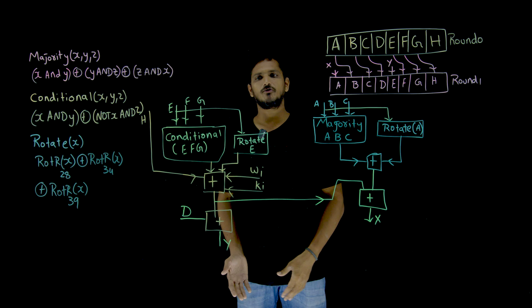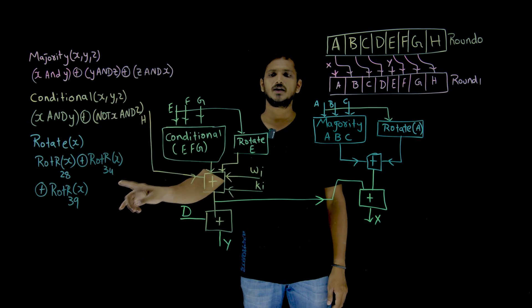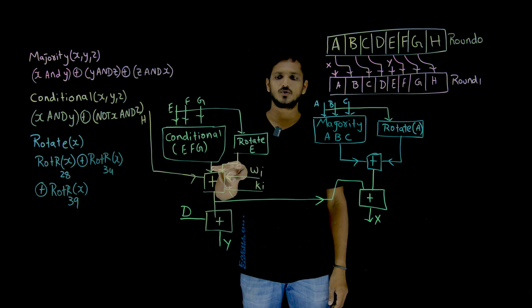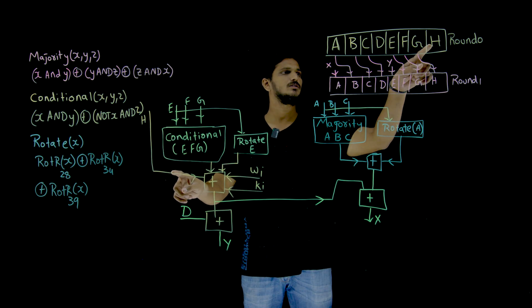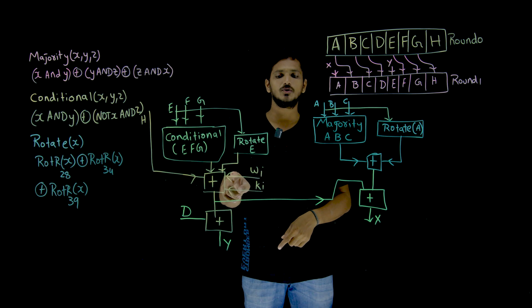Similarly, if you want to find the Y value, we have to take EFG values sent into a conditional function, conditional of EFG. What is this function? We will understand at the end. It is going to be sent into a rotate function. E is going to be sent into a rotate function. These two are going to generate 64 bits, 64 bits. Not only these two outputs, H value, the last one, H value is going to be taken as input and WI, KI.